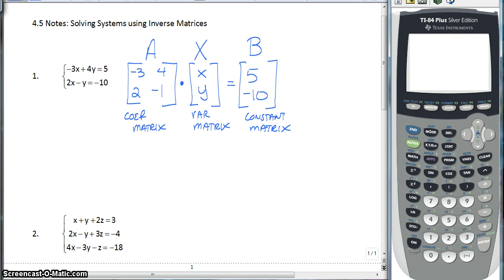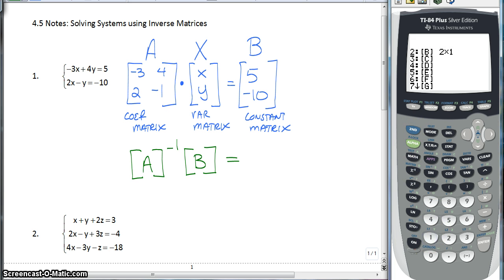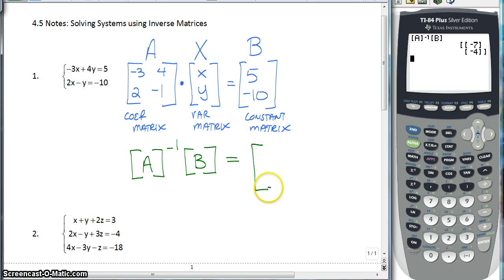And this is what you need to type into the calculator. We need to take the inverse of matrix A and multiply it by matrix B. And that, all we have to do is second matrix A, inverse button, second matrix B, press enter, and you get negative 7, negative 4.